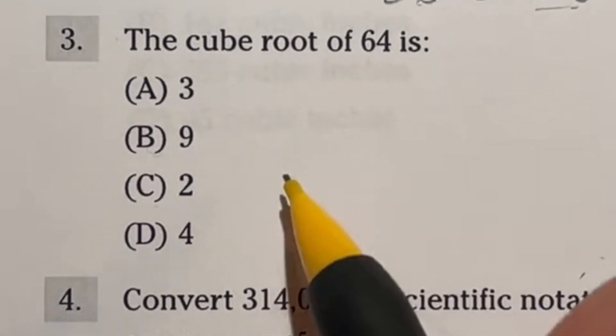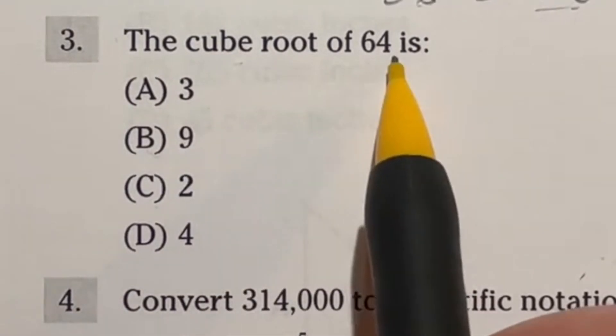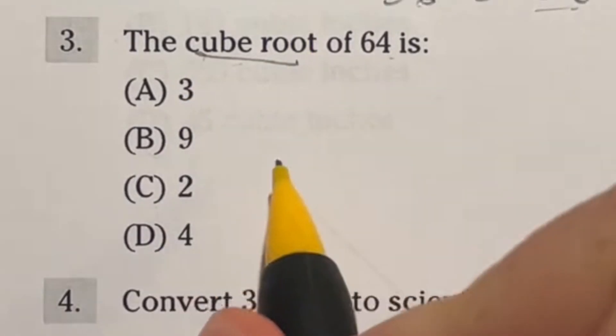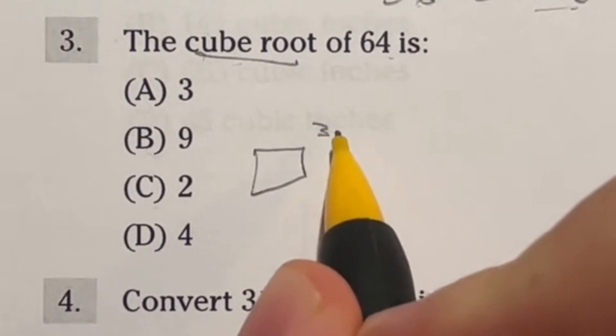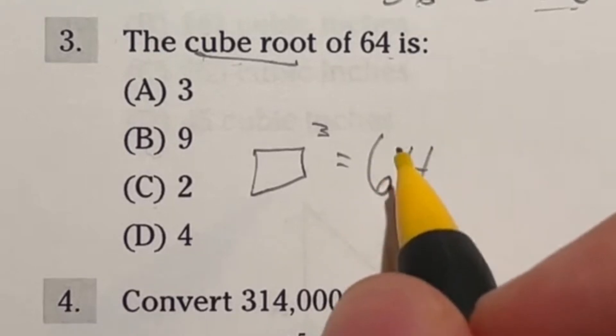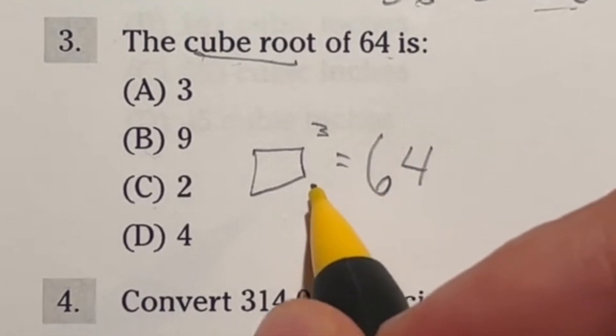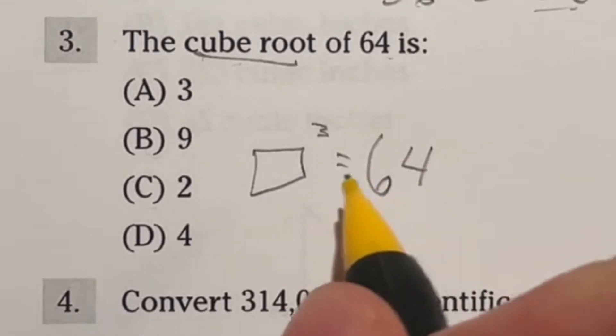So questions like this should be super easy on your ASVAB. Pretty straightforward. It says the cube root of 64 is blank. So what does cube root mean? It means essentially what number raised to the third power or cubed is equal to 64. Now there's no great way to just do this because there's no calculator for this one. So you can't really just cube root it. So what do you do?